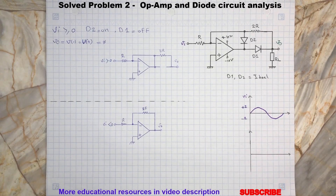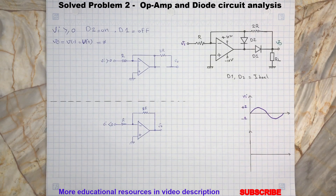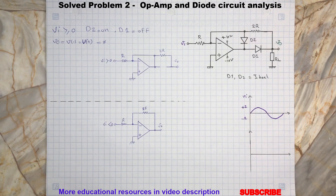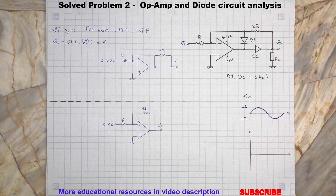Now assume Vi is smaller than zero. Then the op-amp output voltage will swing to the positive saturation. Remember, this is because the voltage at the non-inverting terminal is greater than the inverting terminal. So this will forward bias the diode D1 and reverse bias the diode D2. Here is the simplified circuit for this condition. As you can see here, the circuit becomes an inverting op-amp amplifier with the following output expression.